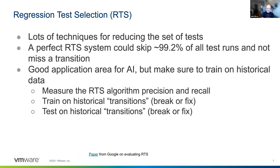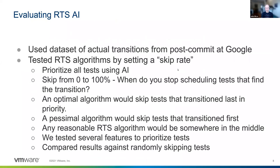We did a study on this — I wrote a paper in 2018 with Claire for evaluating RTS. We used a dataset of actual transitions from post-committed Google code. We tested RTS algorithms by setting a skip rate: the AI prioritizes all tests from most to least important, then you start skipping in order of that priority. We know from the historical data which test actually caused the transition — say, test five broke on submission three. The goal is that the AI should skip test five last, since it knows test five is going to break. An optimal algorithm would skip the transitioning test dead last; a pessimal algorithm would skip it first.